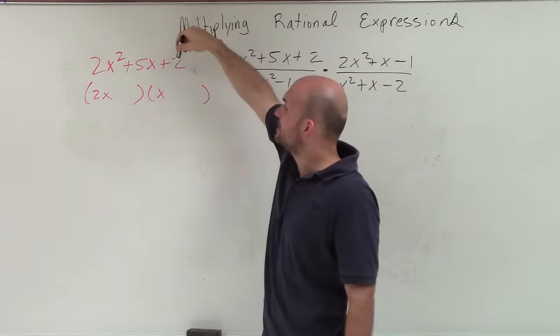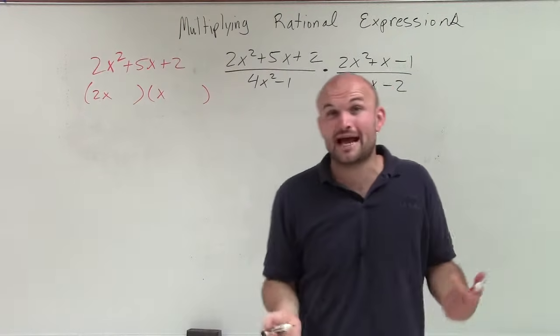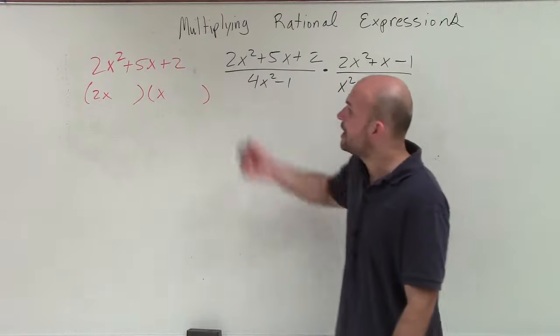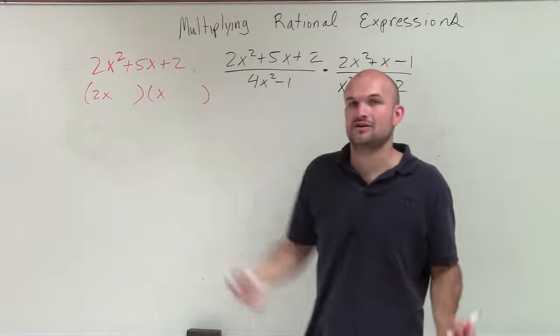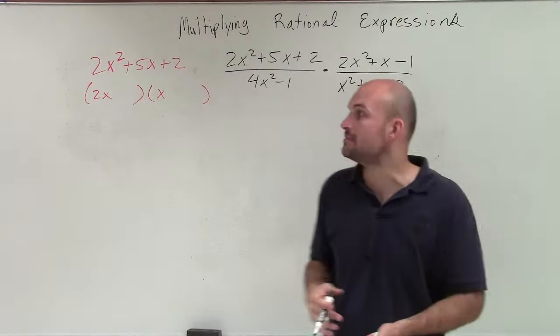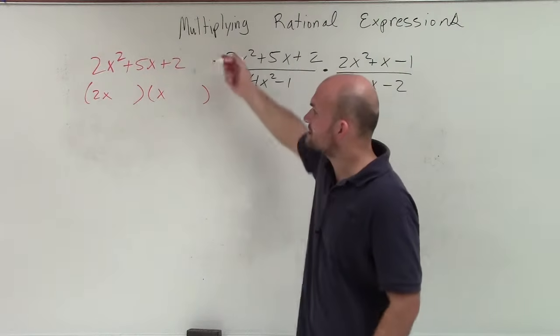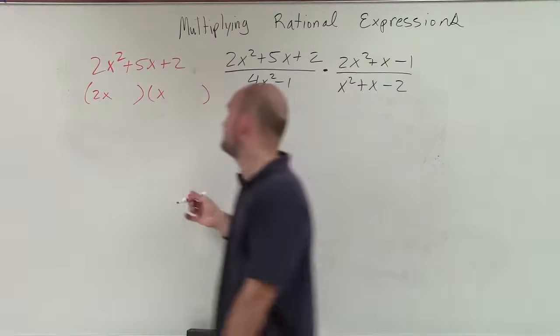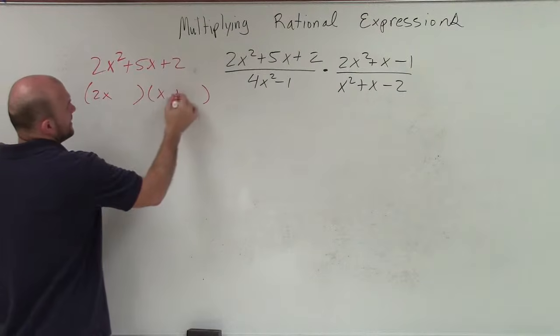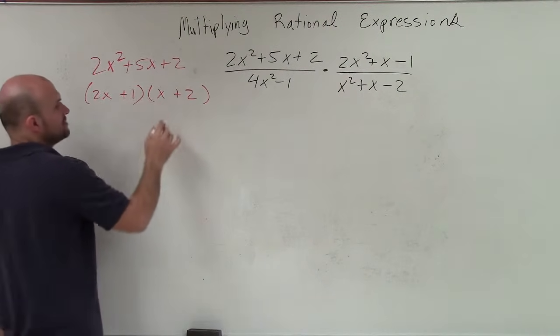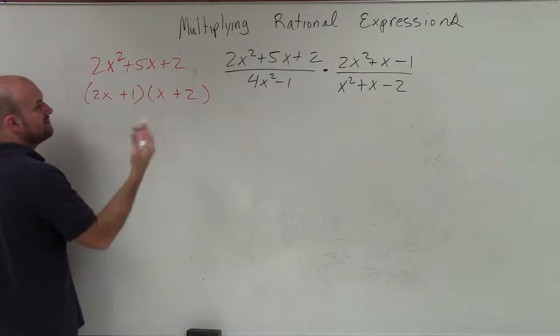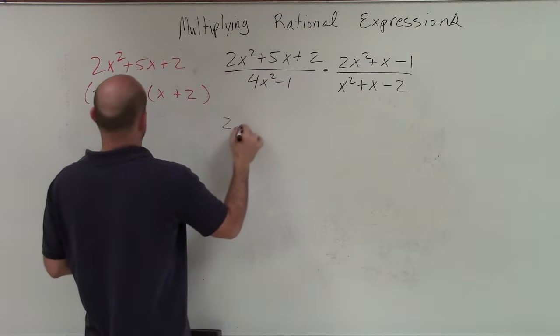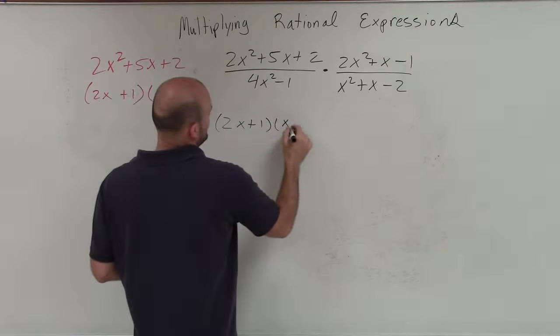Then what we're going to do is say, the last two terms have to give us 2. So our only options there are positive 2 and positive 1, or negative 2 and negative 1. However, the terms have to add up to a positive 5. So we can eliminate our negative numbers and just use the positive. So what do I need to multiply 2 by and then multiply x by, so therefore they add up to 5? Well, I realize that if I do 2x times 2, that gives me 4x, plus x times 1 gives me 5x. So therefore, that's going to be my factored form for this trinomial. So I have 2x plus 1 times x plus 2.